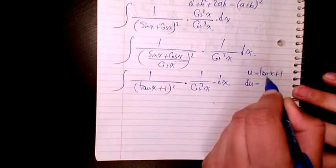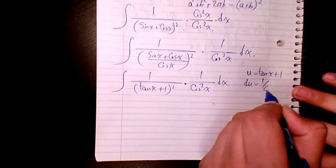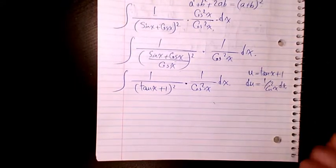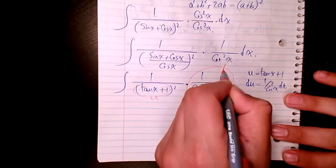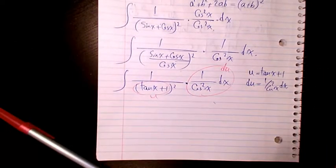So then this part is going to be u and this part will be du. So we will have u to the power of negative 2 du.